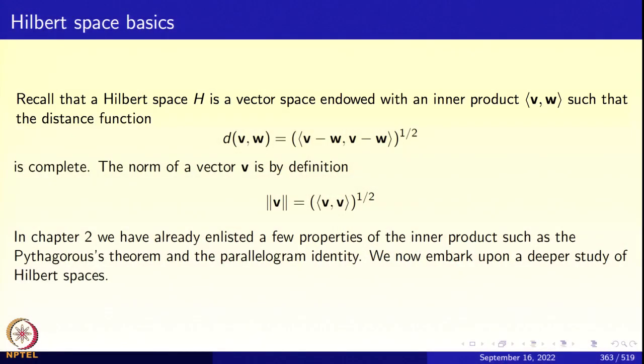Now let us take up the next topic in this chapter on functional analytic preliminaries for Fourier series: Hilbert space basics. We already used elementary facts about Hilbert spaces such as least square approximation. Here we shall go a little deeper. Recall that a Hilbert space is a vector space H endowed with an inner product ⟨v, w⟩ such that the norm is given by ‖v‖ = √⟨v, v⟩. If the resulting distance function is a complete metric, we call it a Hilbert space.